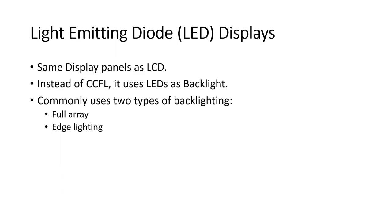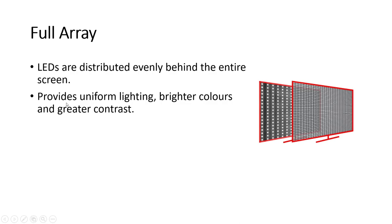Next we move on to LED displays, whose main components are light emitting diodes. LED displays are a special kind of LCD display where instead of using CCFL as the backlight, LEDs are used. The panel used for LED displays is the same as for LCD displays — both are flat panel displays. The main differences are the backlight and some implementational details. There are two types of backlighting: full array, where LEDs are distributed evenly behind the entire screen providing uniform lighting, brighter colors, and greater contrast, and edge lighting.